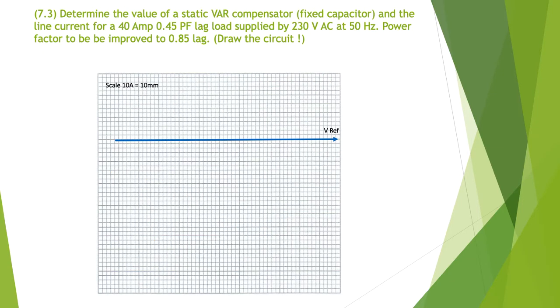Problem 7.3: Determine the value of a static VAR compensator, that's a fixed capacitor, and the line current for a 40 amp, 0.45 power factor lag load supplied by 230 volts AC at 50 hertz. Power factor to be improved to 0.85 lag.